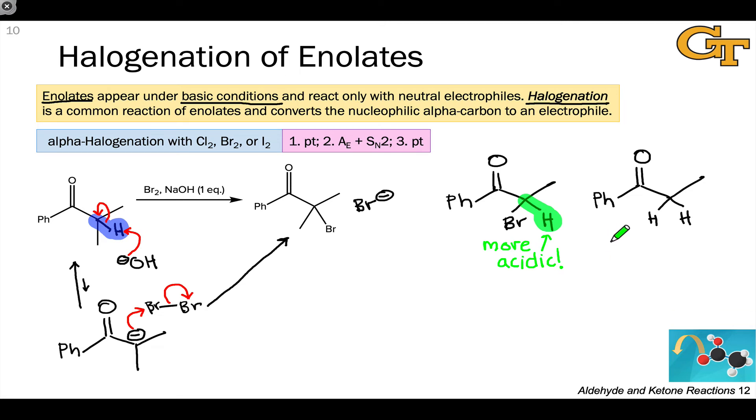This is going to lead to an additional halogenation taking place. If that's what you want, that's fine, but it's not possible to stop this at the monohalogenation stage when we have more than one alpha hydrogen linked to the alpha carbon. The major product under basic conditions involves replacement of all the alpha hydrogens with halogen atoms.